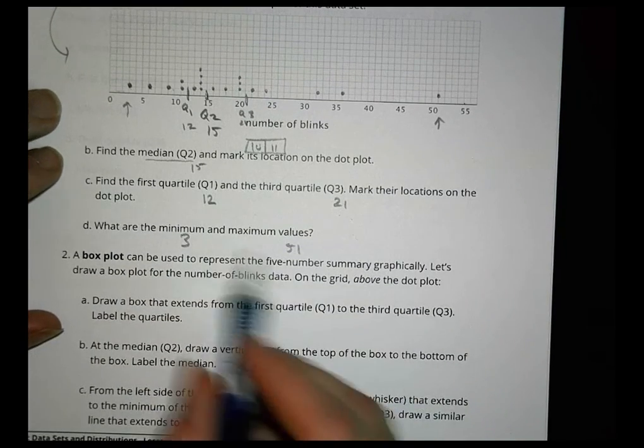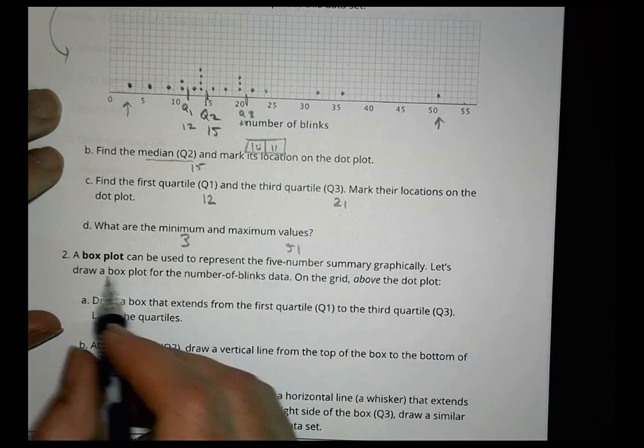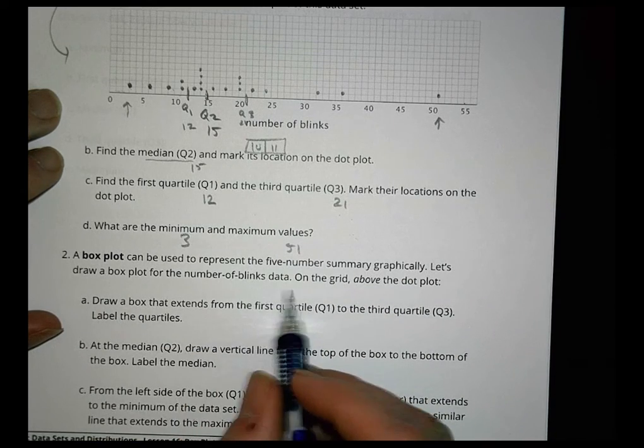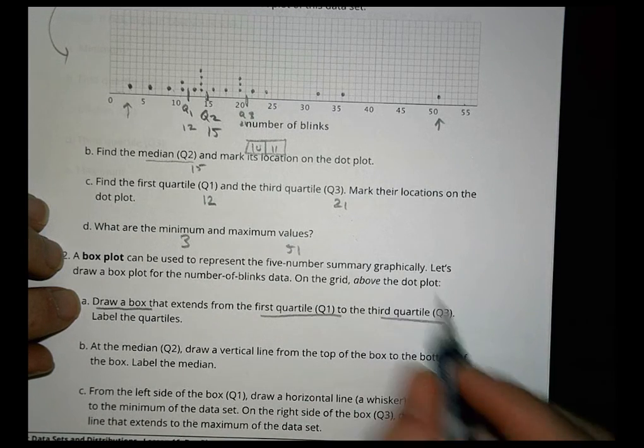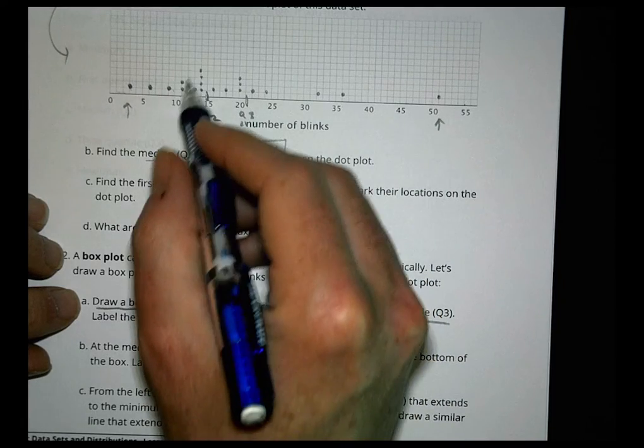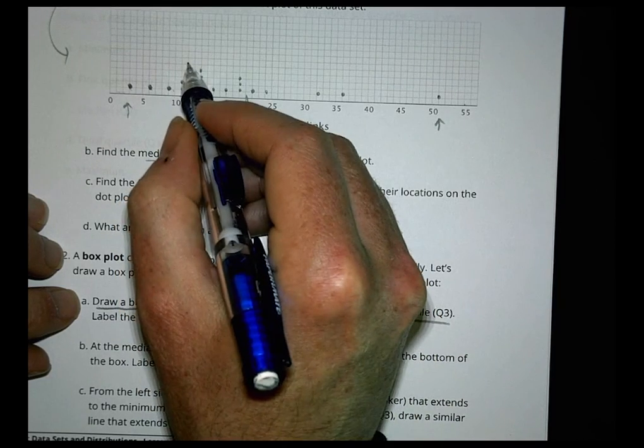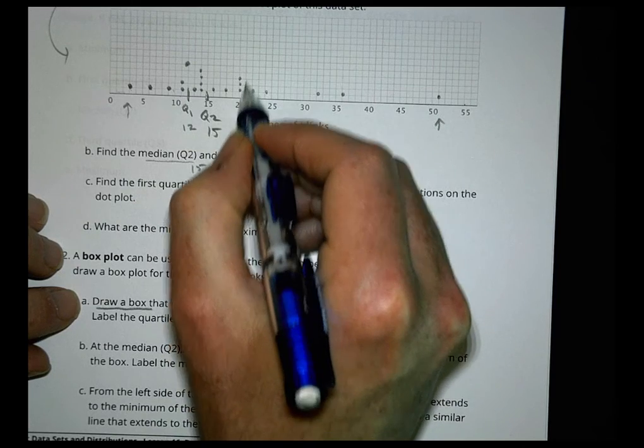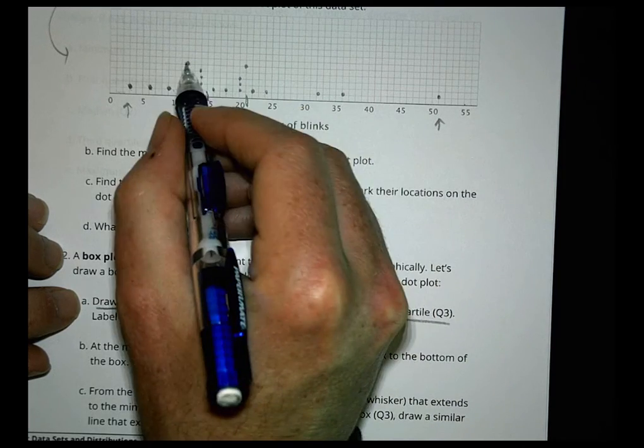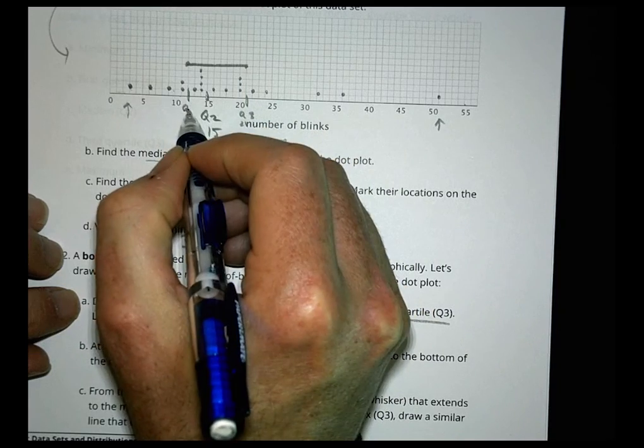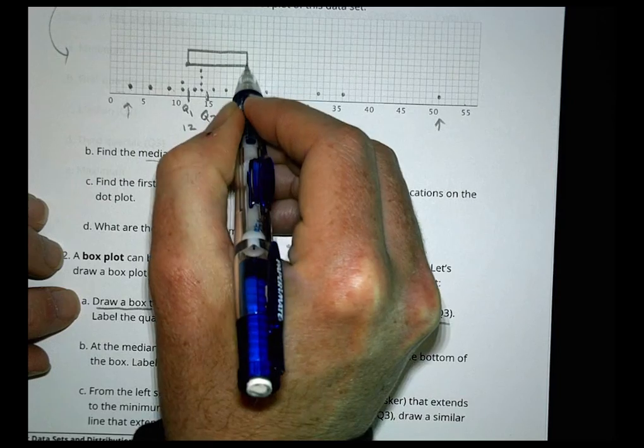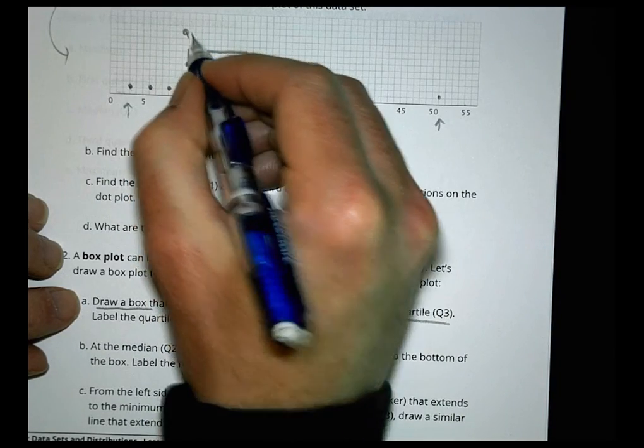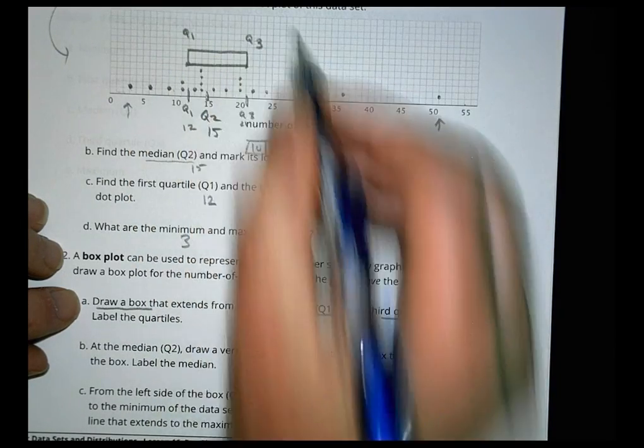Now a box plot is what we're talking about here, can be used to represent the five-number summary graphically. Let's draw a box plot for the number of blinks. So first, draw a box that extends from the first quartile to the third quartile. So our first quartile is here at quartile one, which is right there. And quartile three is here at twenty-one. So we're going to draw a box that extends from there to there, from twelve to twenty-one.